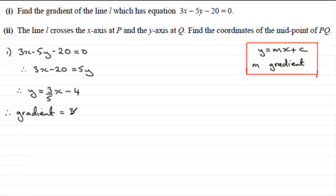Now in part 2 we're told that the line L crosses the x-axis at P and the y-axis at Q, and we've got to find the coordinates of the midpoint of PQ.